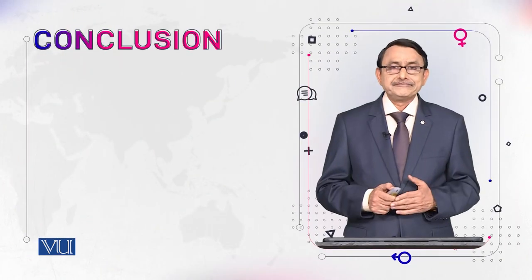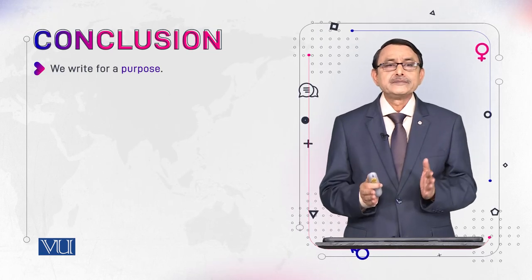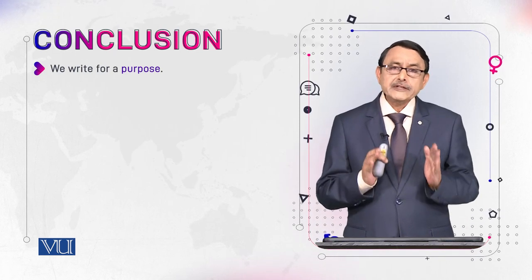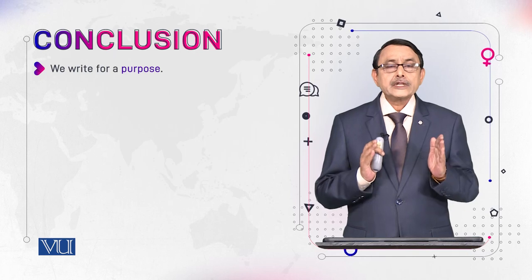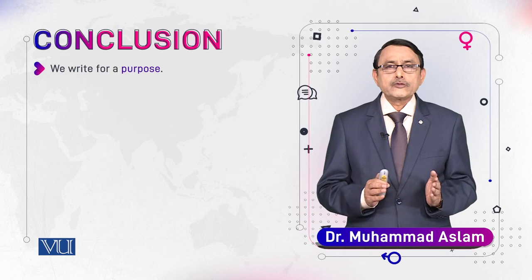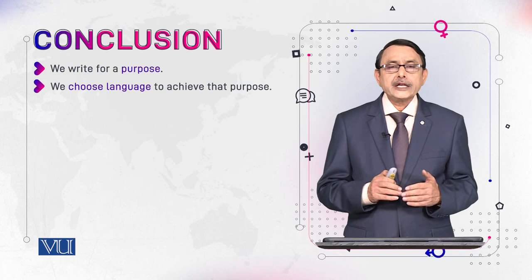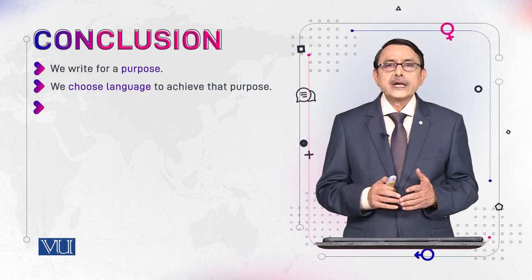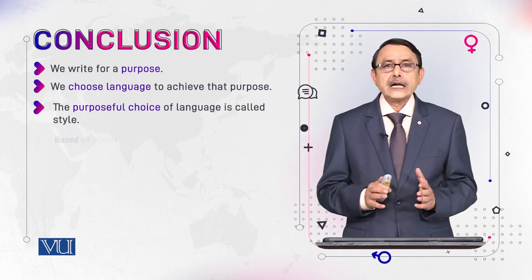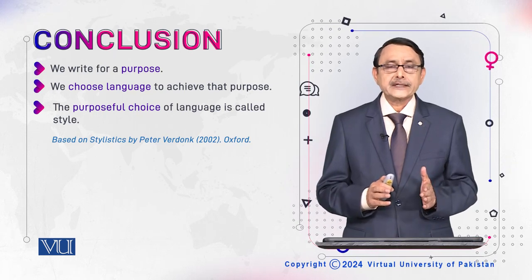We conclude: we write for a purpose, whether we are writing literature or non-literature. We write for some reader, for some audience — to influence that person, to leave some effect. And we are successful in leaving that effect by choosing particular words and particular grammar. In other words, by adopting an appropriate style.